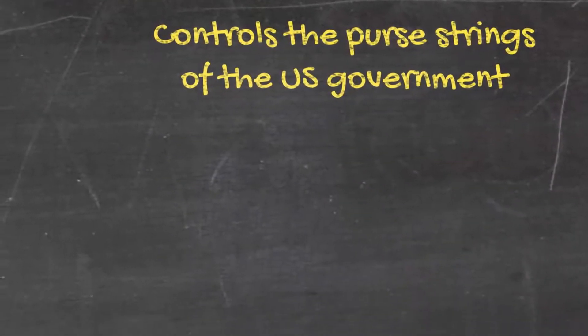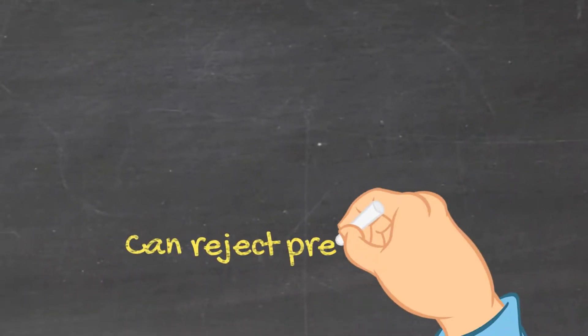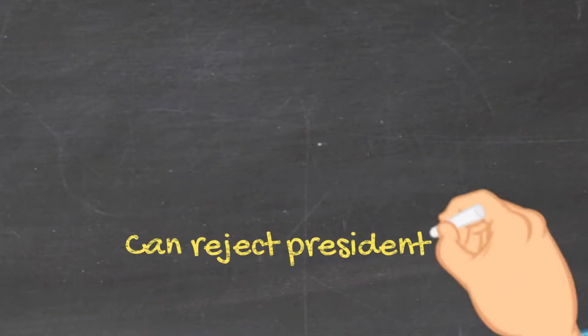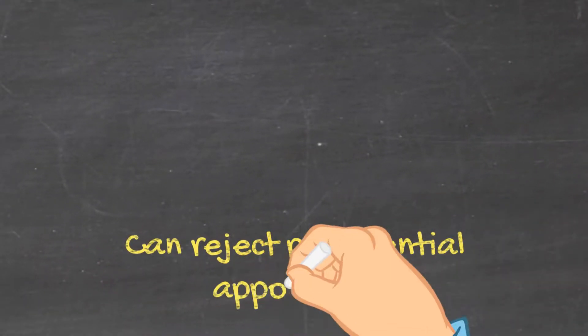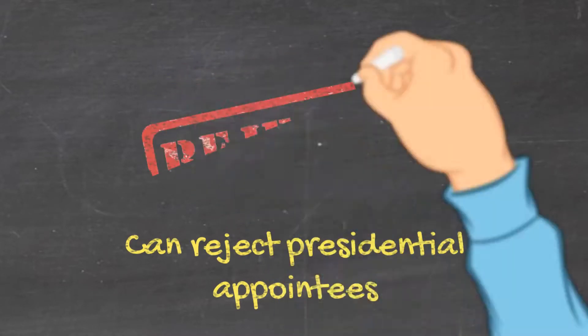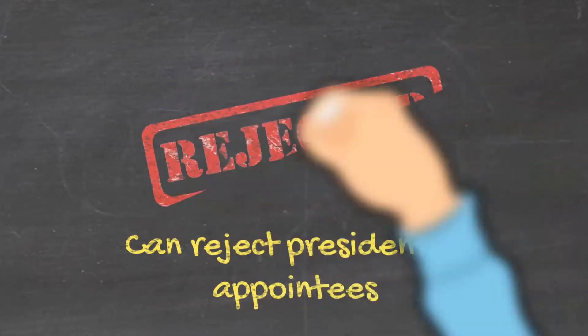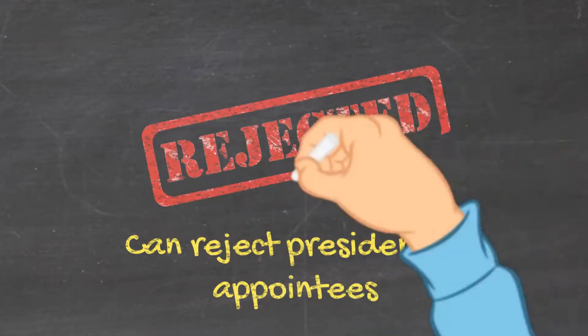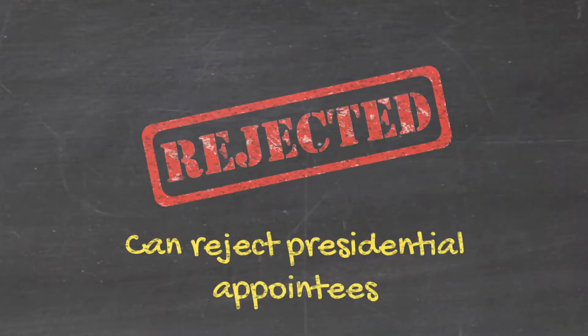Although the president controls the major appointments in US government, these appointments must be ratified by Congress. More than this, all treaties negotiated by the president must be agreed by Congress.